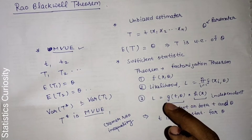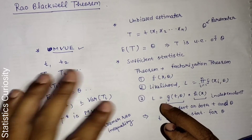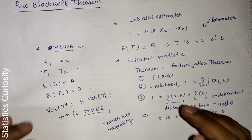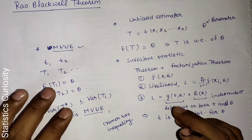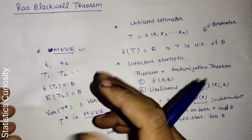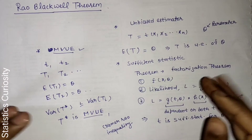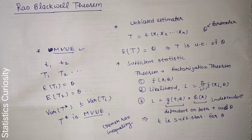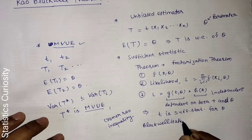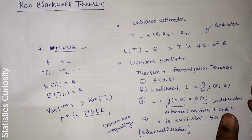Rao and Blackwell gave a theorem that provides an improved estimator T*, which is based on both a sufficient statistic and an unbiased estimator. This improved estimator has a smaller variance than the original unbiased estimator. This process of finding a minimum variance unbiased estimator using a sufficient statistic and an unbiased estimator is called Blackwellization.